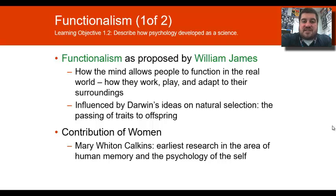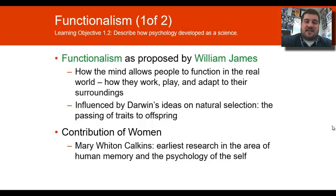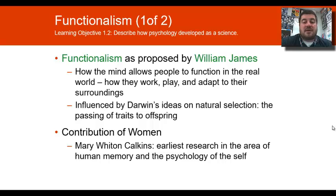Functionalism was proposed by American William James. He basically wanted to know how psychology allows people to function in the real world and how they adapt to their environment. Functionalism is influenced by Darwin's theory of evolution and natural selection. Mary Calkins did the earliest research on human memory and the psychology of the self within functionalism, showing that women contributed very early to the field.